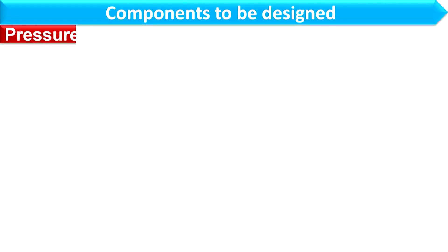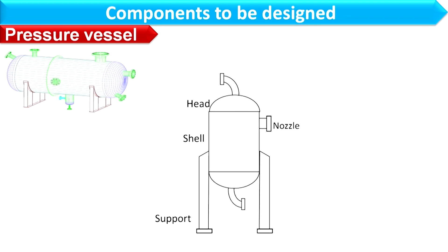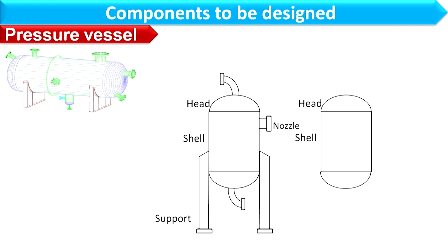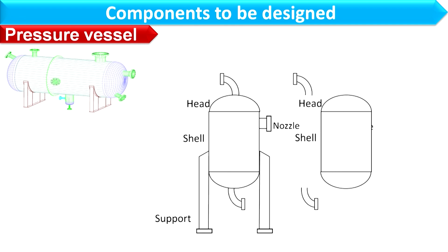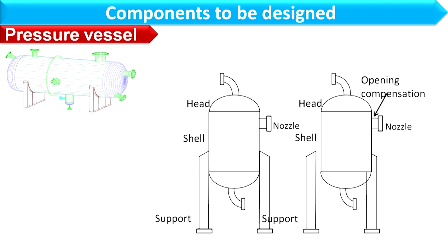In this course, the components to be designed for the pressure vessel are: shell, heads, nozzle, flange and compensation of opening, and support.